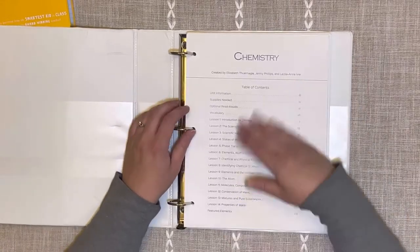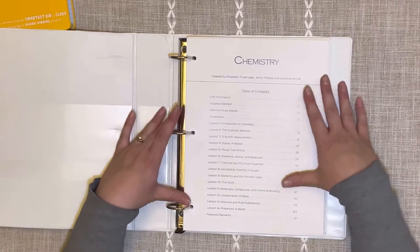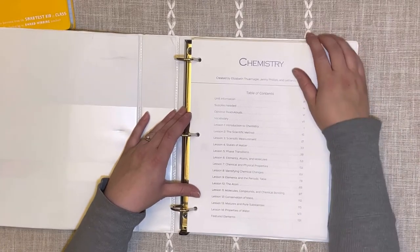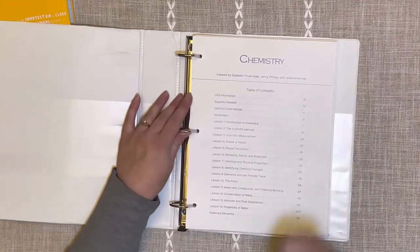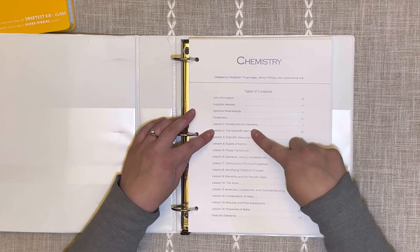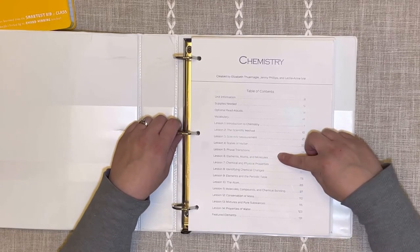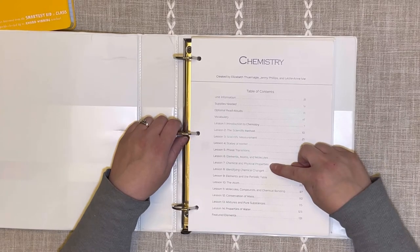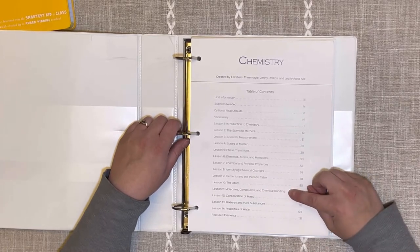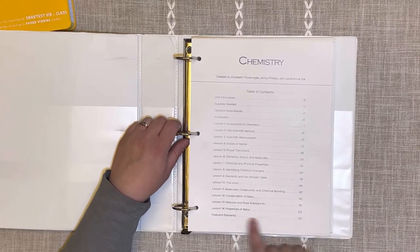I will read through the table of contents so you know what this main lesson block is going to cover. In the beginning, you'll have the unit information, then supplies needed, optional read-alouds, and vocabulary. Then lessons: introduction to chemistry, the scientific method, scientific measurement, states of matter, phase transitions, elements, atoms and molecules, chemical and physical properties, identifying chemical changes, elements and the periodic table, the atom, molecules, compounds and chemical bonding, conservation of mass, mixtures and pure substances, properties of water, and featured elements.